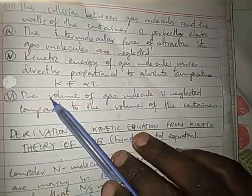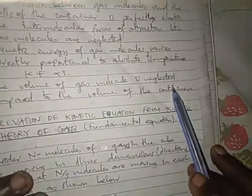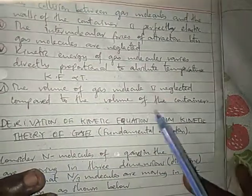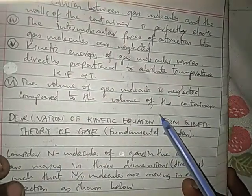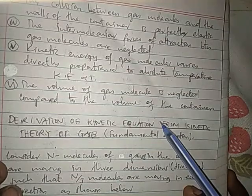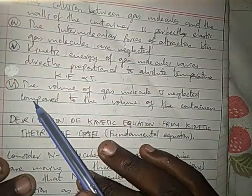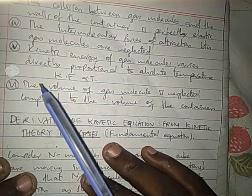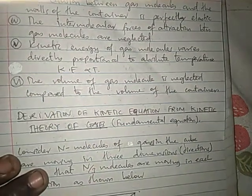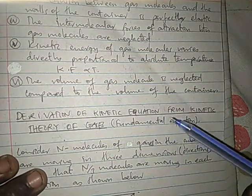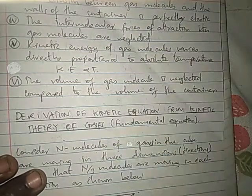Number six, the volume of the gas molecules is neglected compared to the volume of the container. Now, among these six assumptions, you must be very careful with assumption number four and assumption number six, because later we shall be discussing about the real and ideal gases.